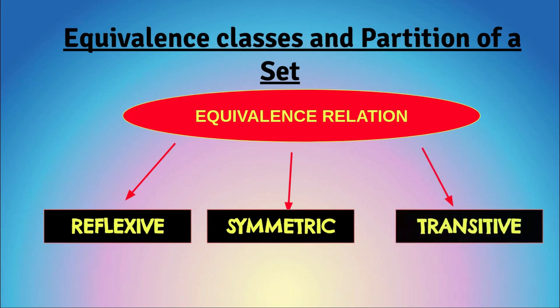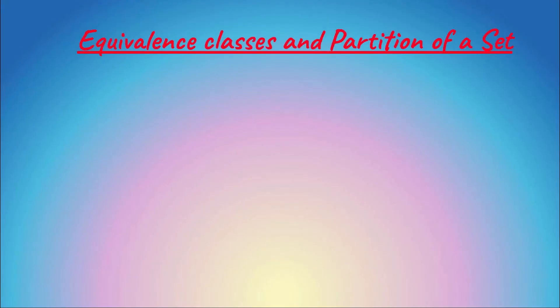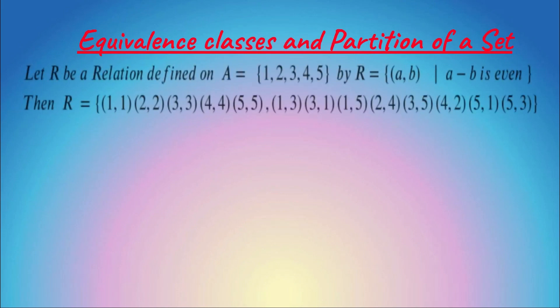Now, considering an equivalence relation, let's see how equivalence classes and partitions exist. For example, let R be the relation defined on A = {1, 2, 3, 4, 5}, defined by R = {(a, b) such that a minus b is even} — that is, the difference is even.